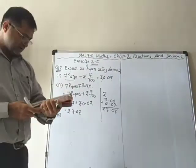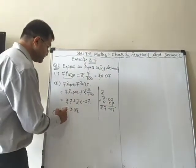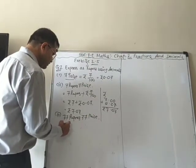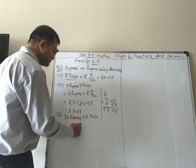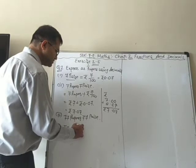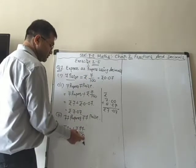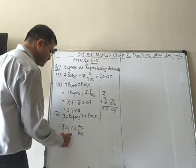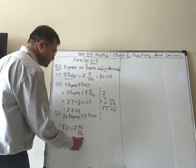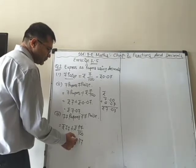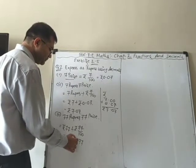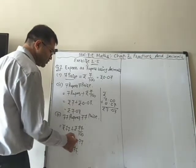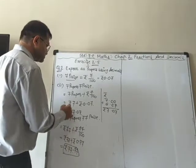Third one is 77 rupees 77 paise. We keep the rupees as is, plus 77 paise means rupees 77 upon 100. As I told you, we have to divide by 100. Two decimal places means 0.77, so rupees 77 plus rupees 0.77 gives us rupees 77.77.